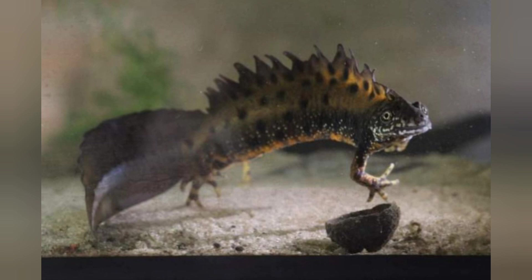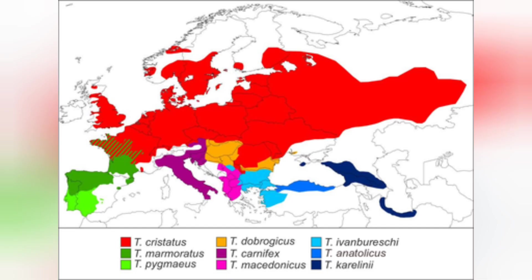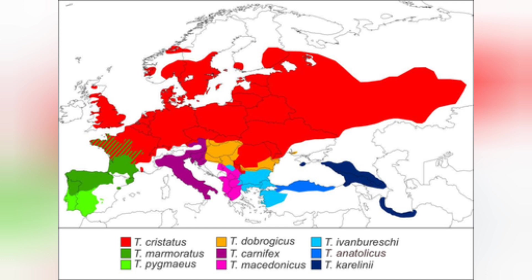Triturus dobrogicus has the smallest distribution range of all the crested newts, and its distribution is also fragmented — it is cut across the middle by Triturus cristatus. The greater part of the distribution lies in Hungary in the west, down into Croatia and parts of northern Serbia. The second eastern population is found in southern and eastern Romania and along the northern tip of Bulgaria.